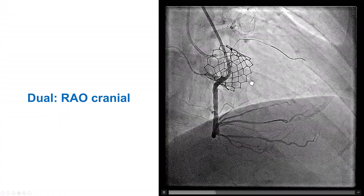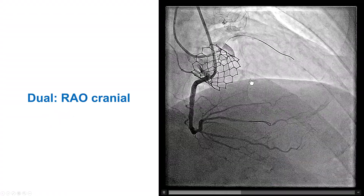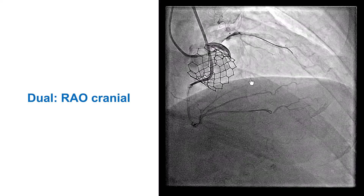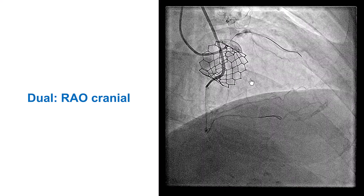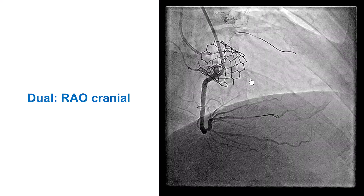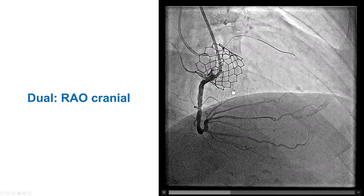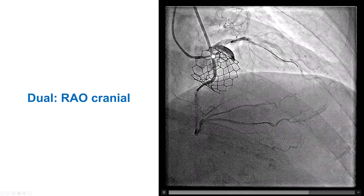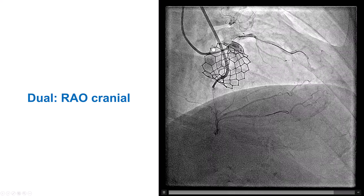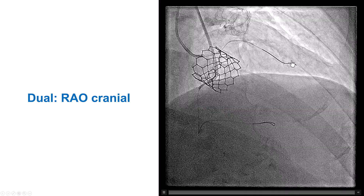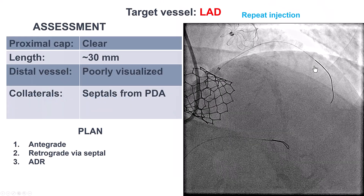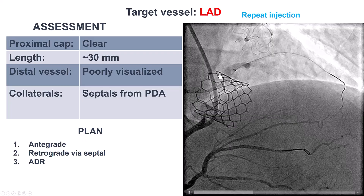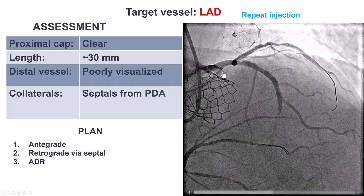After doing that, we were able to visualize the vessel and performed dual injection. This is the injection in the antero-cranial view. We can see the RCA pretty well, but the Trapliner is not well engaged in the left main, so visualization is not perfect. We then advanced the Trapliner a little further in, and this is the dual injection.